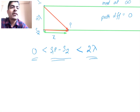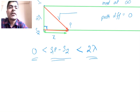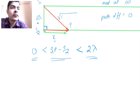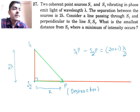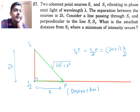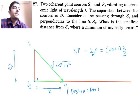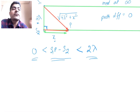To find s1p, apply the Pythagorean theorem to the right-angle triangle. We have s1-s2 = 2 lambda and s2p = x as the two legs, so s1p (the hypotenuse) equals the square root of (4λ² + x²). We want the odd multiple condition for s1p minus s2p.